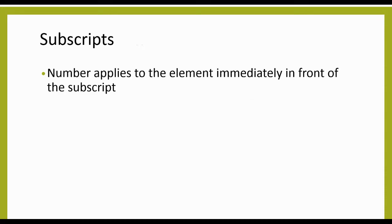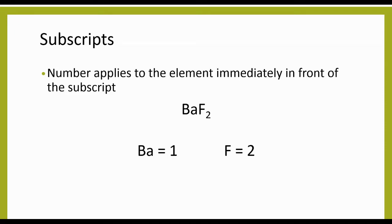There are three different things that can describe the number of atoms we have in a compound. The first is subscripts — the little numbers that come directly after an element symbol and apply to the element right in front of them. For example, in BaF2, the two applies to fluorine. Since there's no number after the Ba, chemists are lazy, so we assume it to be one. So I have one barium and two fluorine.